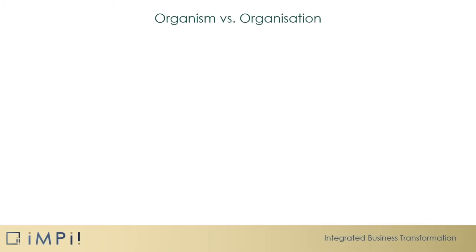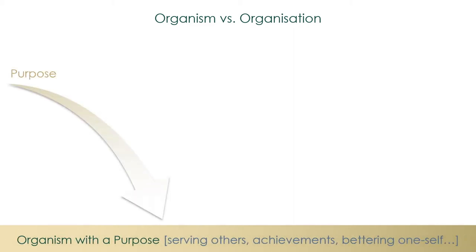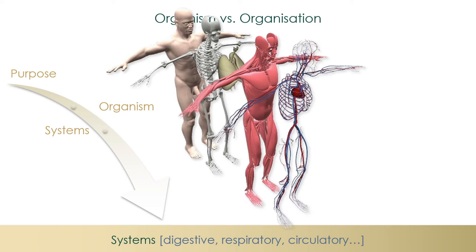In this segment, we are going to compare an organisation to the human organism in order to better understand an MBU. The human organism needs a purpose — without one, a person cannot be fulfilled nor flourish. An example would be serving others, achievements, or bettering oneself. Organisms are made up of various systems that enable the organism to fulfil its purpose, such as the digestive, respiratory, or circulatory systems.